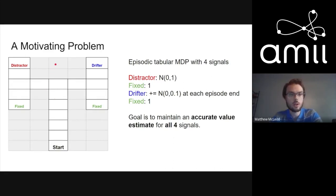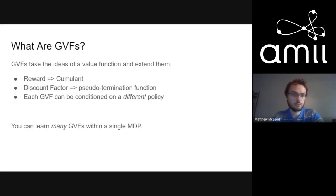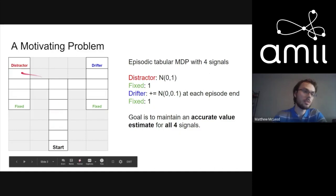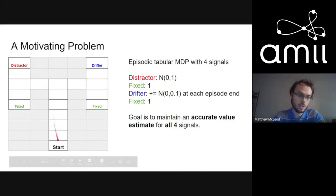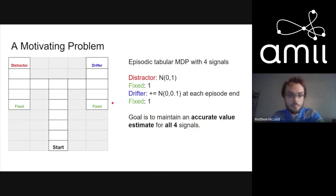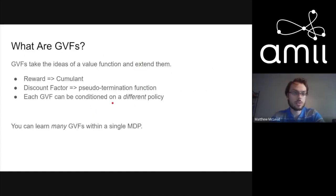This problem is exactly where GVFs fit in. When I said maintain an accurate value estimate for all four signals, I meant I want a value estimate leading up to the distractor for all states, a value estimate for the fixed, a value estimate for the drifter for all states, and a value estimate for the other fixed for all states. GVFs are a way to do this.